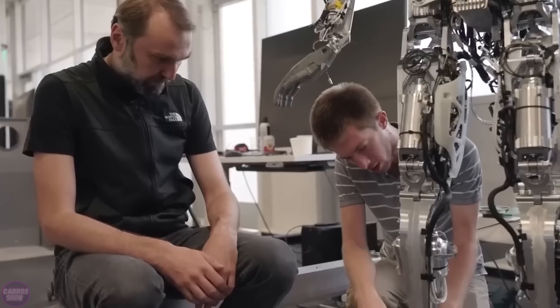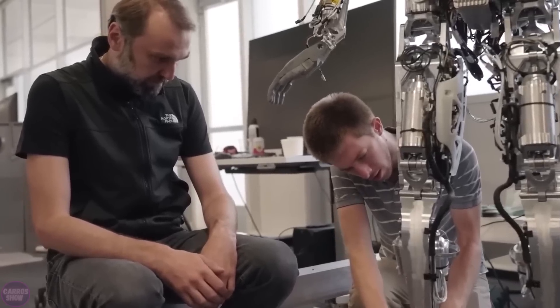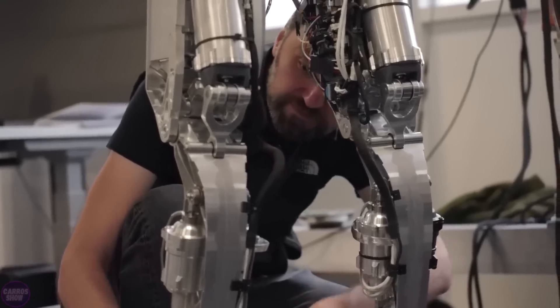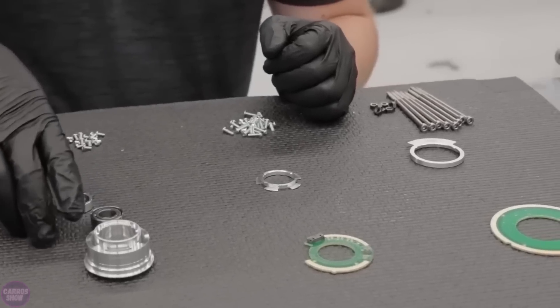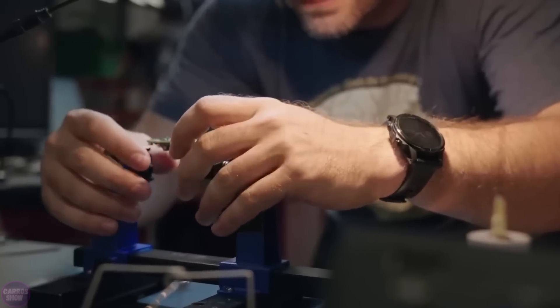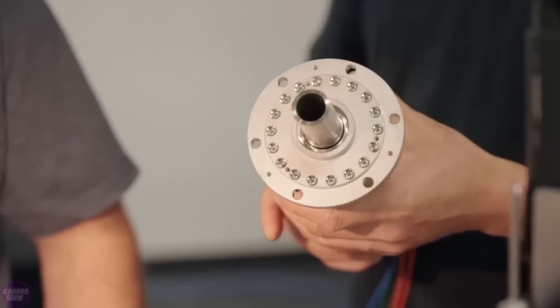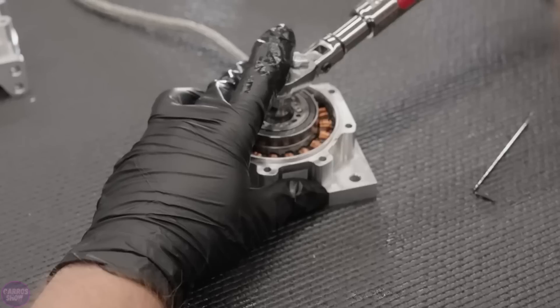Musk described the progress in the development of humanoid robots as moderately fast, calling not to compare its pace to the development of Boston Dynamics robots. At the same time, the entrepreneur is confident that as soon as the robot will be ready, he will be able to launch it into series and in the future the ratio of people to robots will be more than one-to-one.